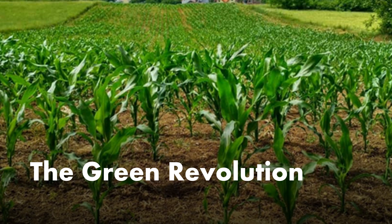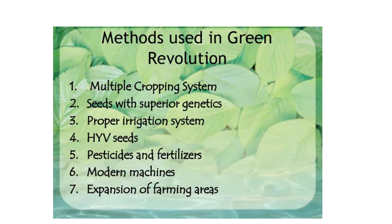The Green Revolution was launched in India in the 1960s. Under this, the government took several steps to increase agriculture output in India. The methods used include multiple cropping system, seeds with superior genetics, proper irrigation system, high yield variety of seeds, pesticides and fertilizers, modern machines and expansion of farming areas.